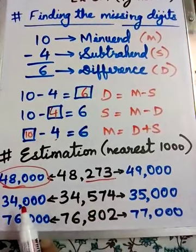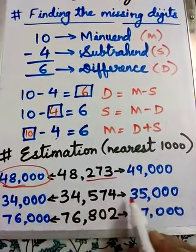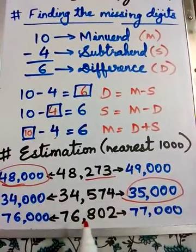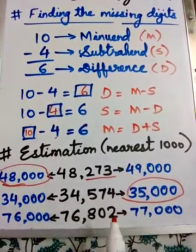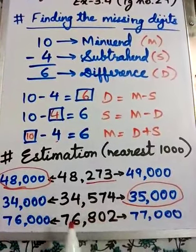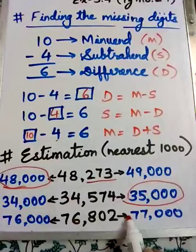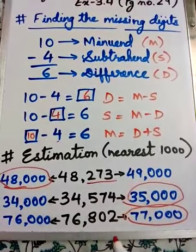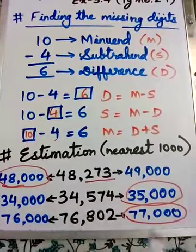34,586 is nearest to 35,000. 76,802 is nearest to 77,000. This is how we find the nearest thousand.